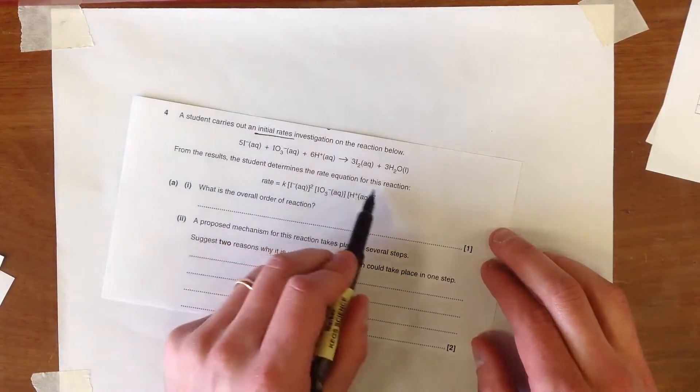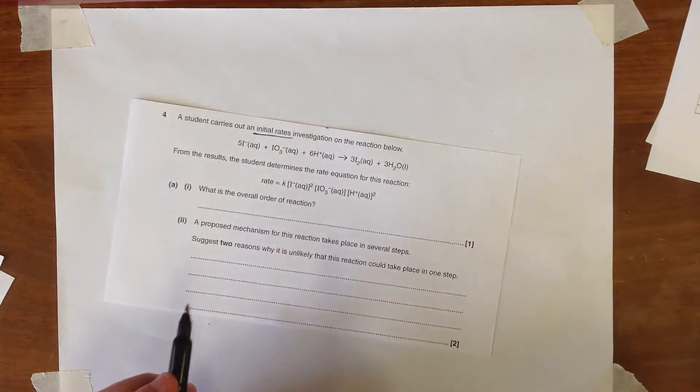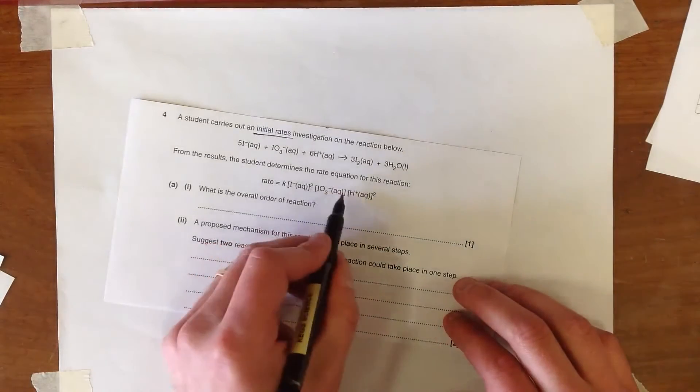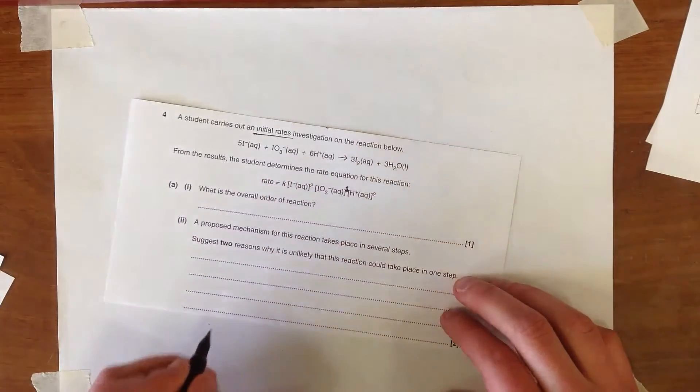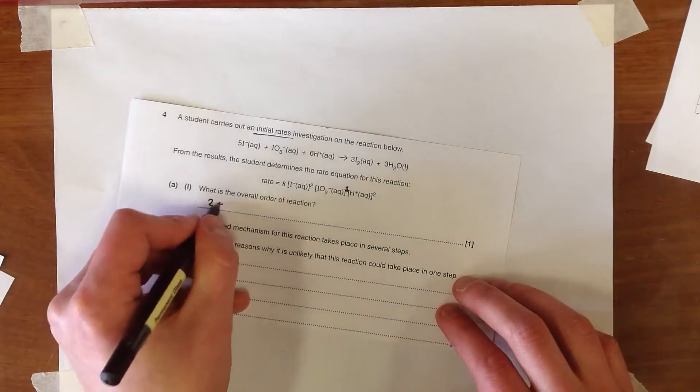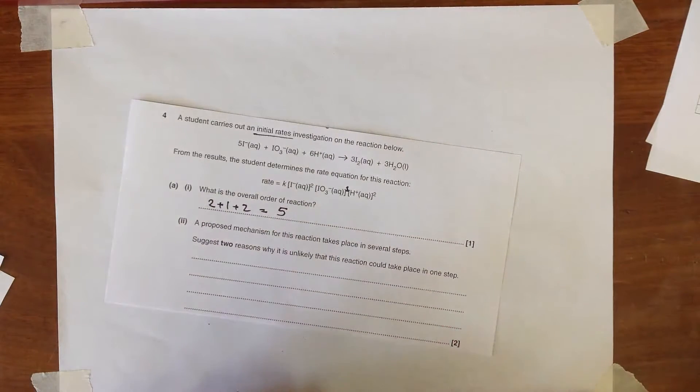From the results there's a rate equation that has already been determined. Now the overall order of the rate equation is just obtained by summing the orders with respect to the individual reactants. The key thing is to notice here that there is a 1 lurking here for the iodate. So we've got 2 plus 1 plus 2 which is 5, which is a 5th order reaction.